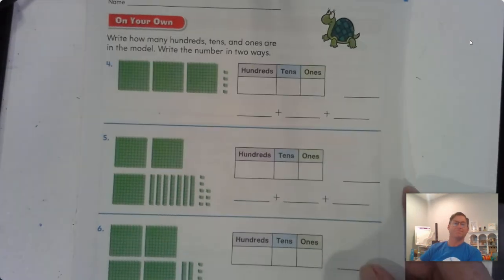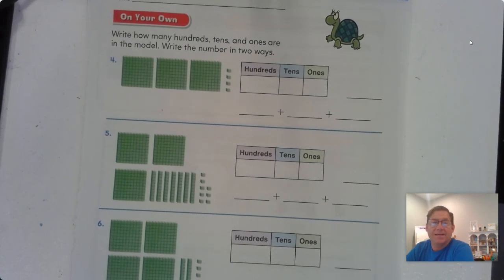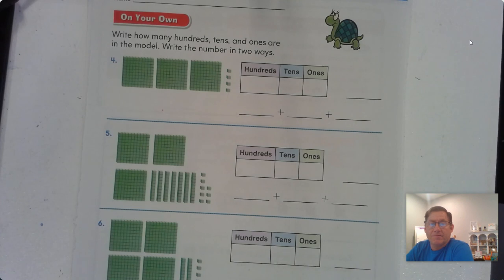Look at page 71. Continue with the same thing. Write how many hundreds, tens, and ones. Now, if you feel like you understand this, I would pause the video, go ahead and solve all the problems, and then maybe come back and check your answers.